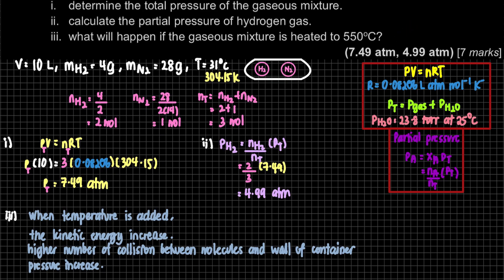There is a higher number of collisions between molecules and the wall of the container. More collision between molecules and the wall means that our pressure will increase. This explanation is something you have also learned during secondary school. When temperature is added, kinetic energy increases, there are more collisions, and therefore pressure increases. That is the explanation for question 3 and that is all for question A.